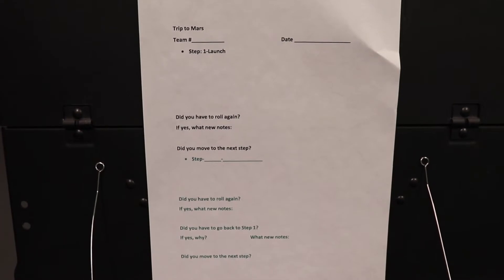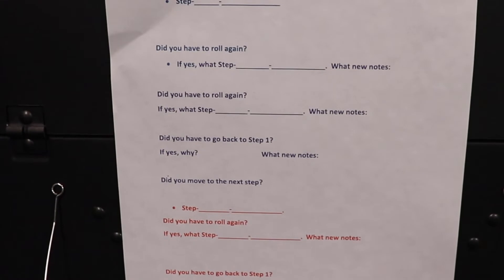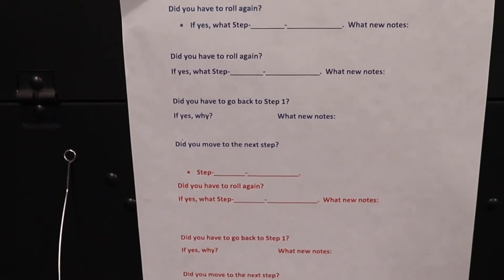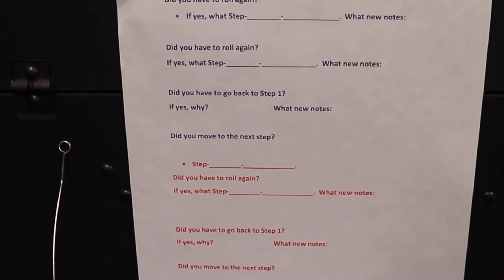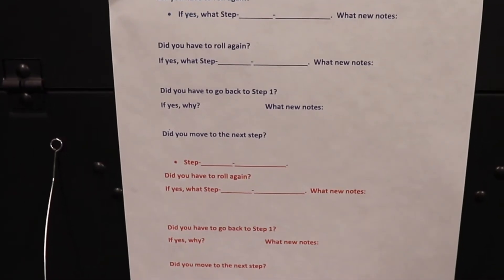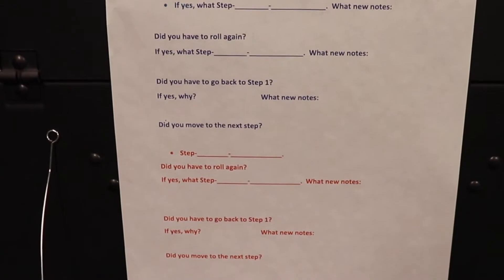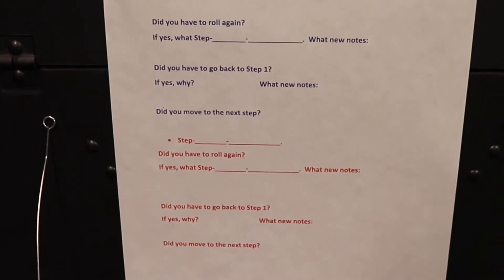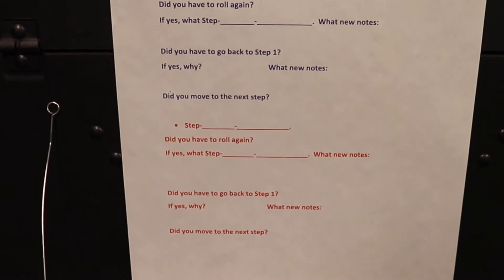Now after you have that prepared, flip over to the back or second page. Write step blank-dash-blank. Did you have to roll again? If yes, what step? What new notes? Did you have to roll again? If yes, what step? What new notes? Did you have to go back to step one? If yes, why? What new notes? Did you move to the next step?